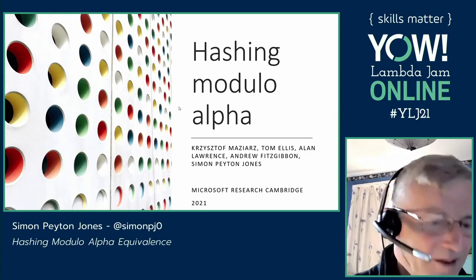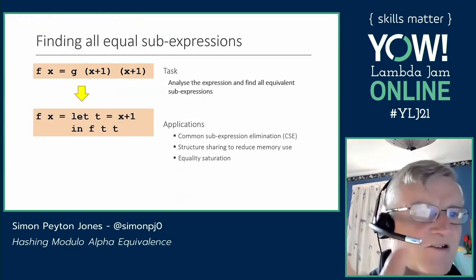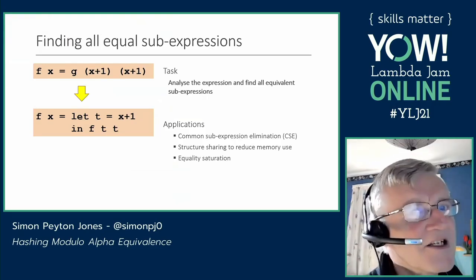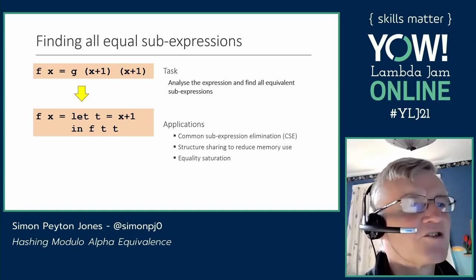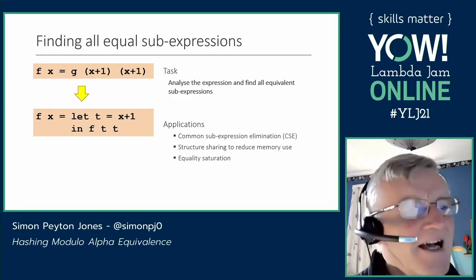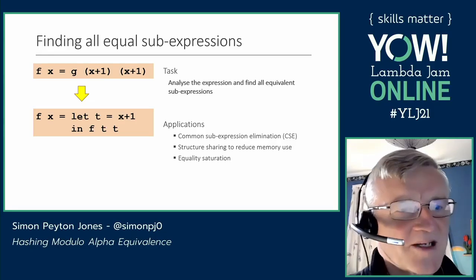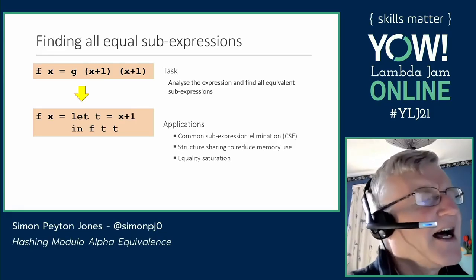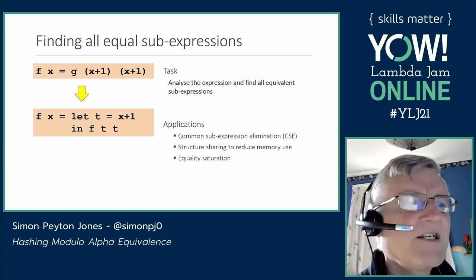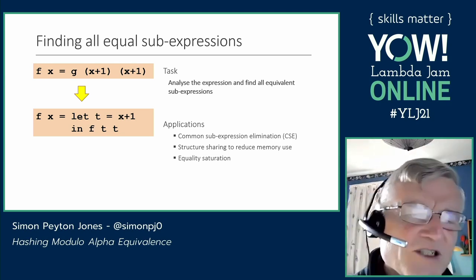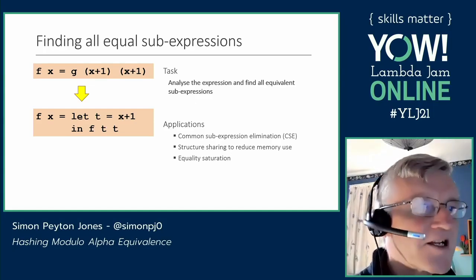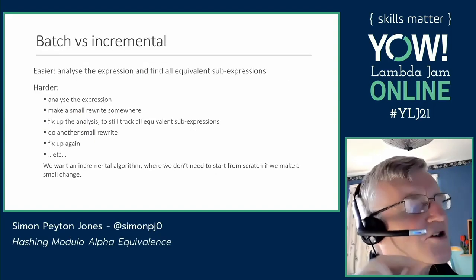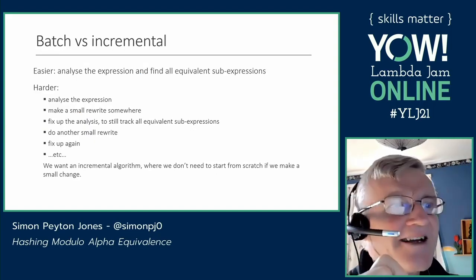Here's the problem: we want to find in a program term all the equivalent sub-expressions and do something like common sub-expression analysis. Here's an example with a function that has two occurrences of the sub-expression x plus one, and I'd like to share them with a let. This is usually called common sub-expression elimination. Another variant is simply to save space when representing program trees, and as we'll see, that's subtly different to sharing program terms in common sub-expression elimination.